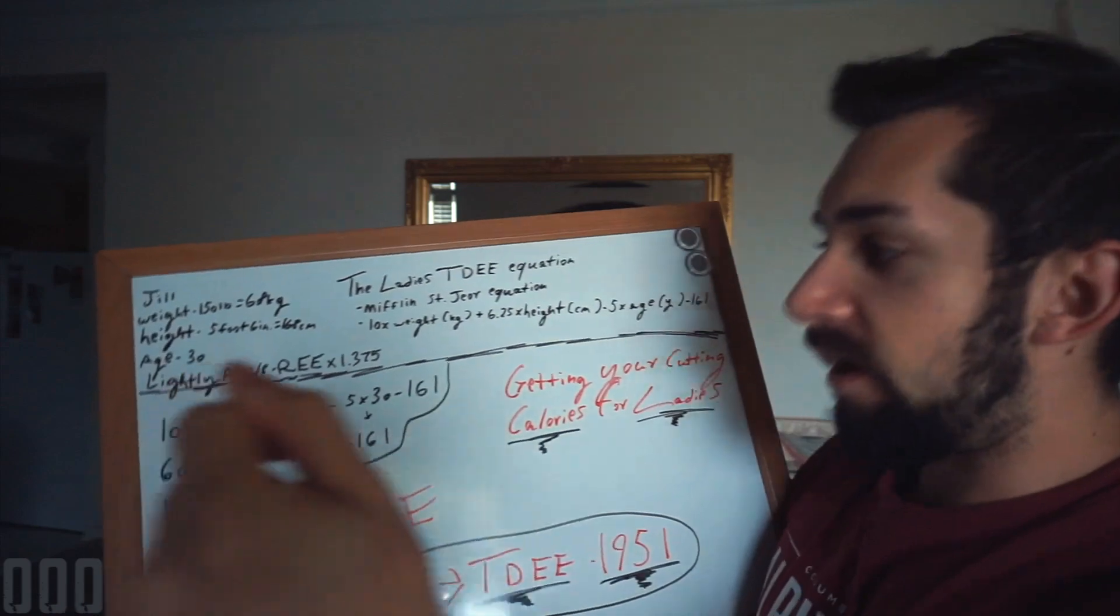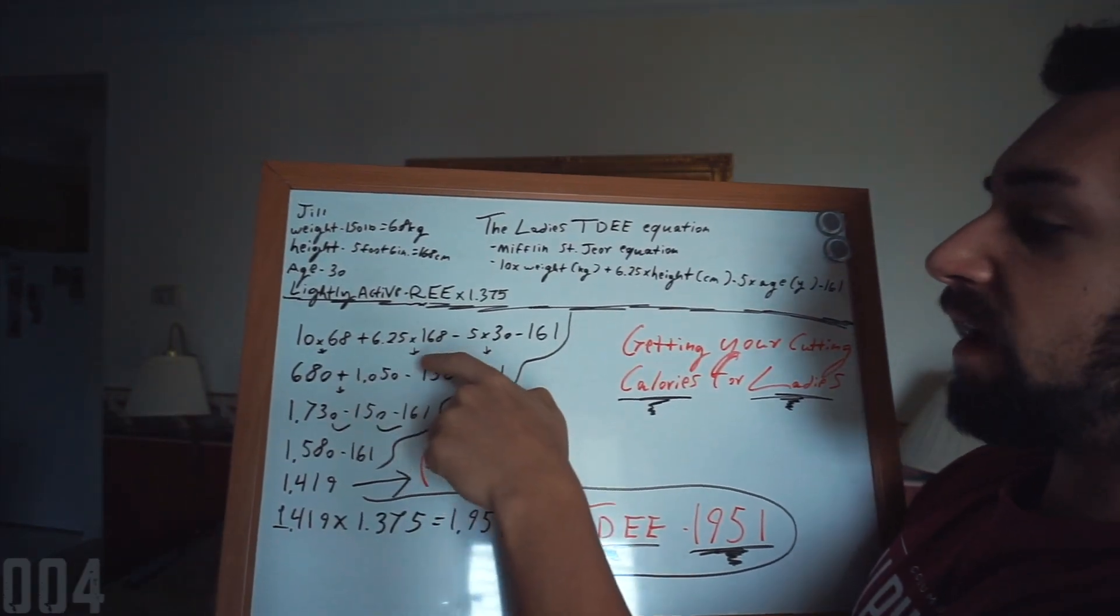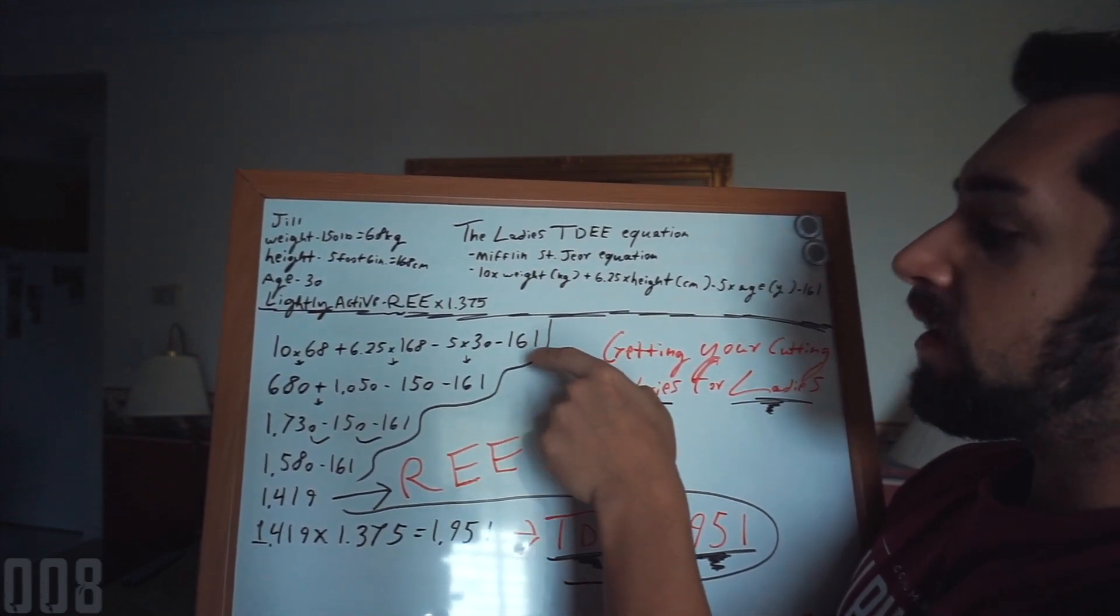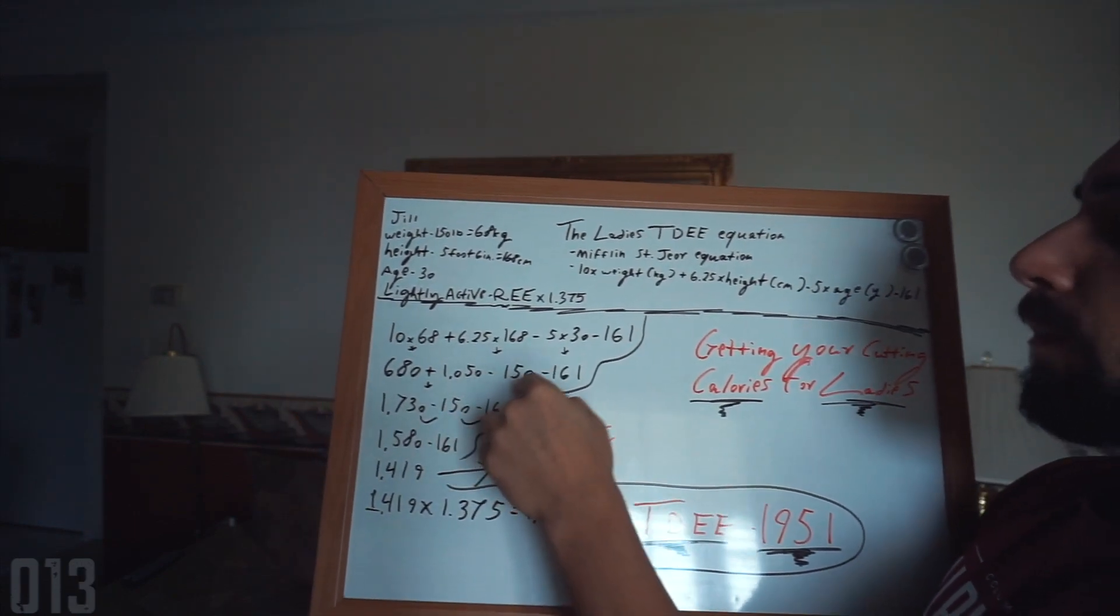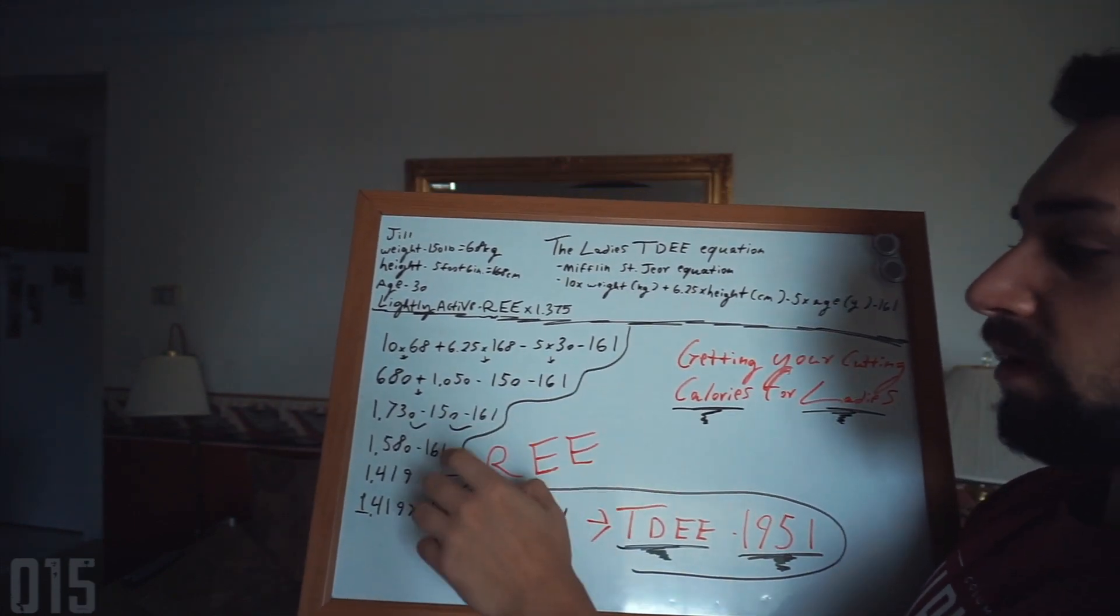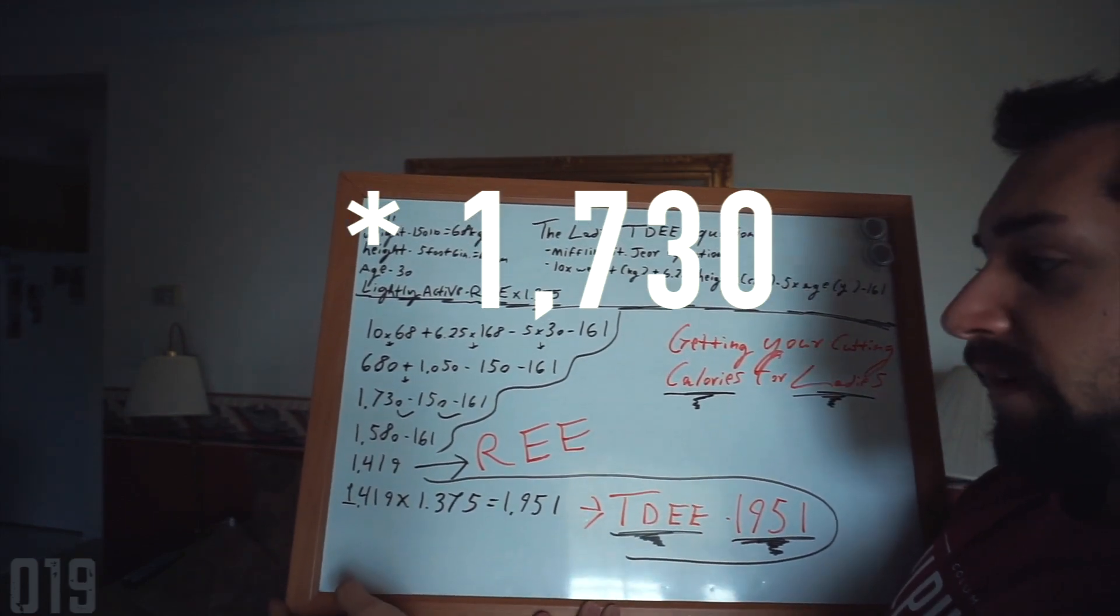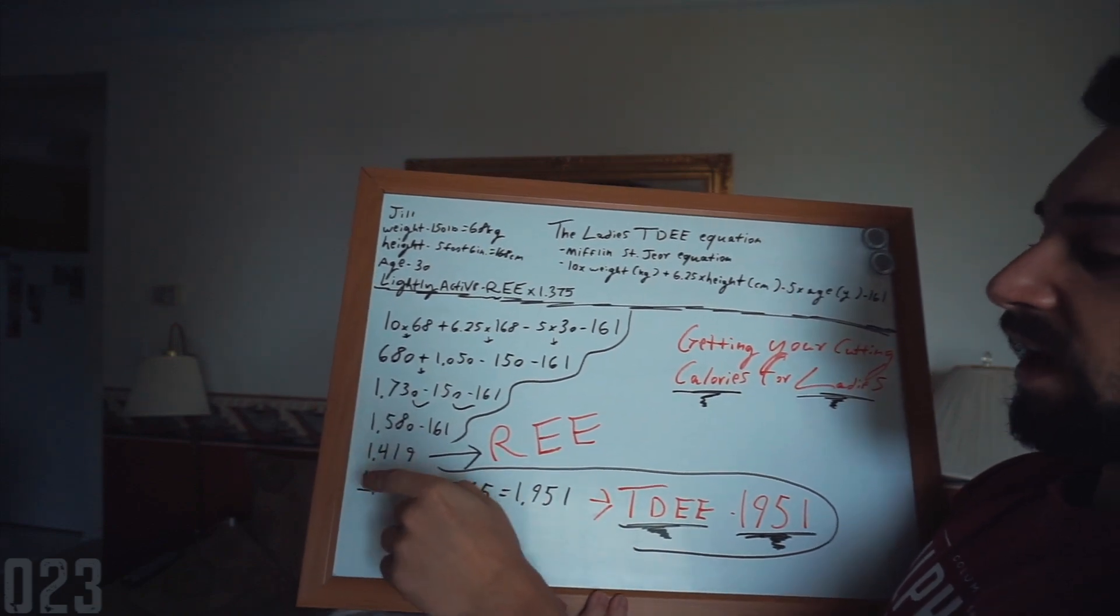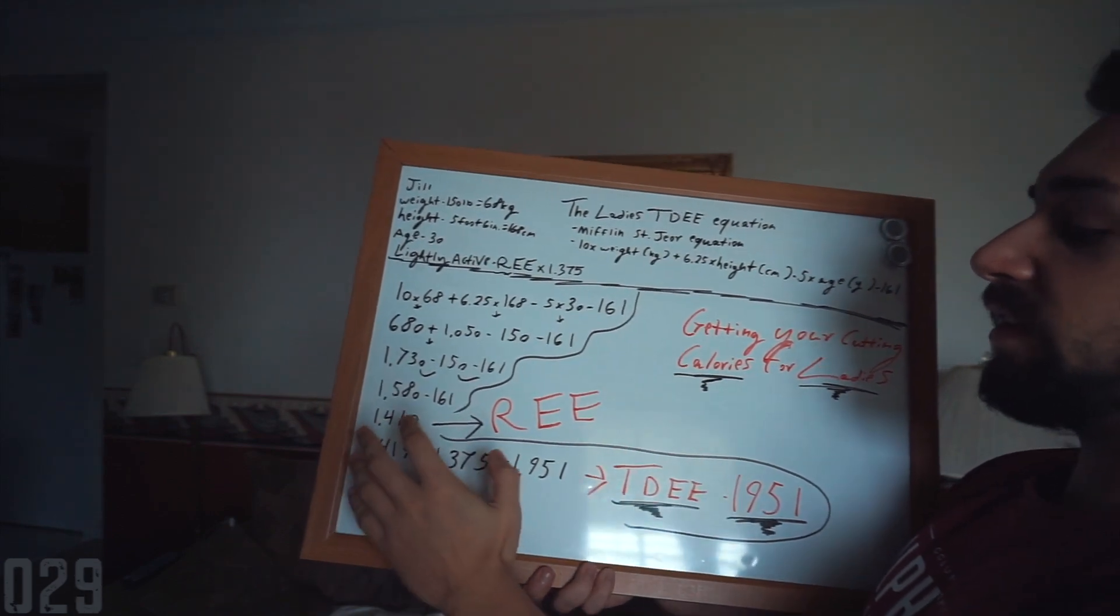All right, cool, awesome. 10 times 68 plus 6.25 times 168 minus 5 times 30 minus 161 brings us to 680 plus 1050 minus 150 minus 161. I'm just gonna bring us down to 730 minus 150 minus 161, which is going to bring us down to 1,580 minus 161, which gives us a resting energy expenditure level of 1419.